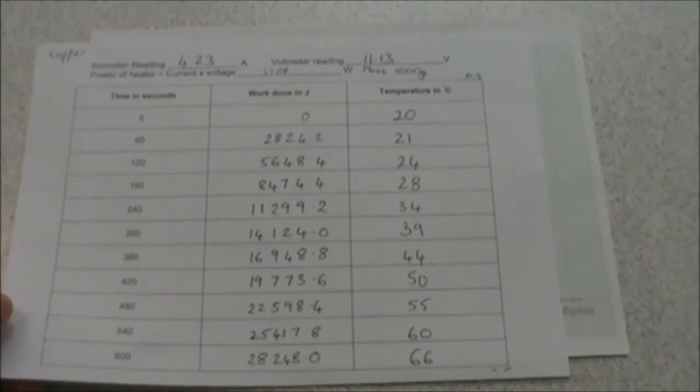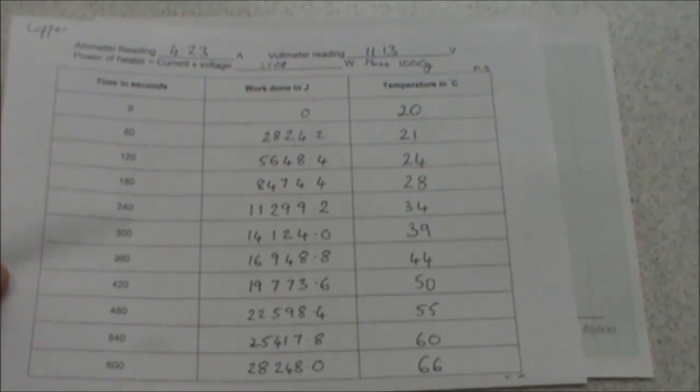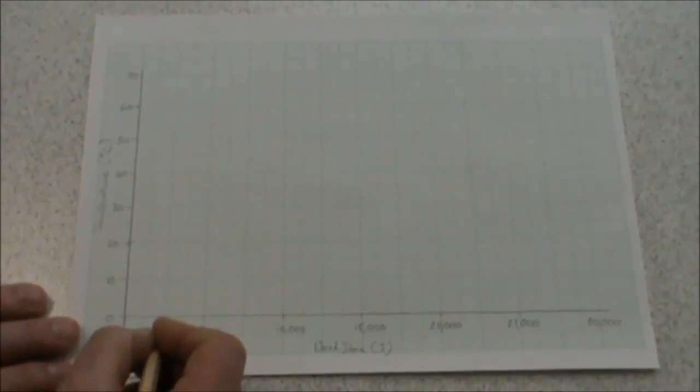The first point is easy. It's 0 and 20. So I put a small x, making sure the centre of the x is on the 20. My next value is 2824.2 and 21 degrees. If I look at my scale, every two squares is 500. So 2800 is just a little bit over 2750. So here's 2500, and there's 3000, there's 2750. And I want to go to 21, which is one square up from the previous result.